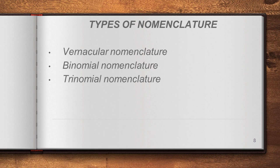First, let us look at the types of nomenclature. There are three types: vernacular nomenclature, binomial nomenclature, and trinomial nomenclature. Let us see each one in detail.